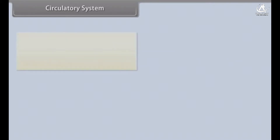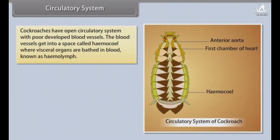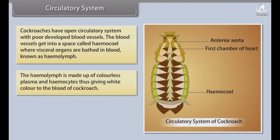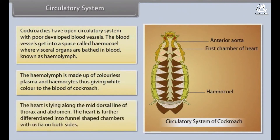Circulatory system. Cockroaches have an open circulatory system with poorly developed blood vessels. The blood vessels lead into a space called the haemocoel, where visceral organs are bathed in blood known as haemolymph. The haemolymph is made up of colourless plasma and haemocytes, giving the blood of cockroach a white colour. The heart lies along the mid-dorsal line of thorax and abdomen, differentiated into funnel-shaped chambers with ostia on both sides.